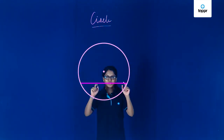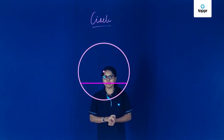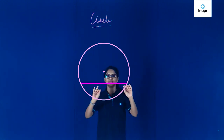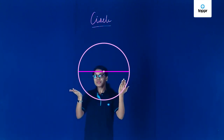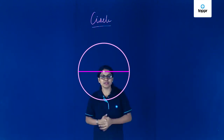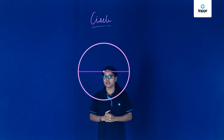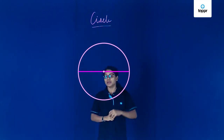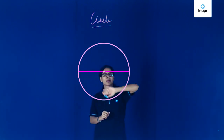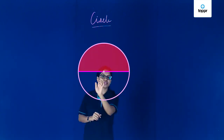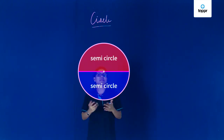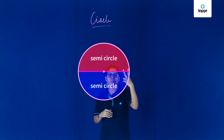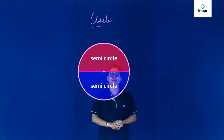Let's start with the circle again. What I'm going to do differently is bring back the diameter to its original place. Now, how many parts is the circle getting divided into? Two parts, and they are equal. Each equal part — say I color one red and the other blue — each part is called a semi-circle. Why semi? Because the circle is getting divided into two parts, so each of these parts is a semi-circle.